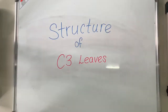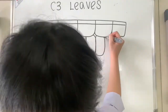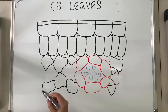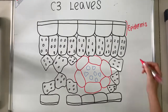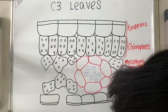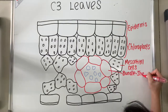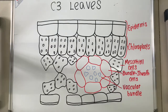Structure of the C3 leaves. We're going to briefly show you the parts that are now being drawn. As we can see in the diagram of the C3 leaves, there is the epidermis, the chloroplast, the mesophyll cells, the bundle sheath cells, the vascular bundle, and lastly, we have the stroma.